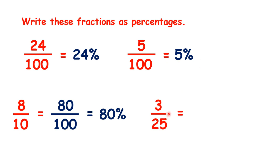And here, to change 25ths into 100, we multiply by 4, so 3 twenty-fifths is equivalent to 12 hundredths, so that's 12%.